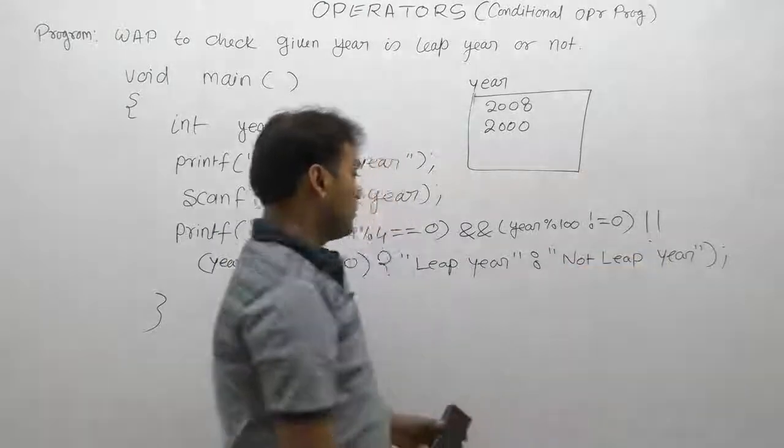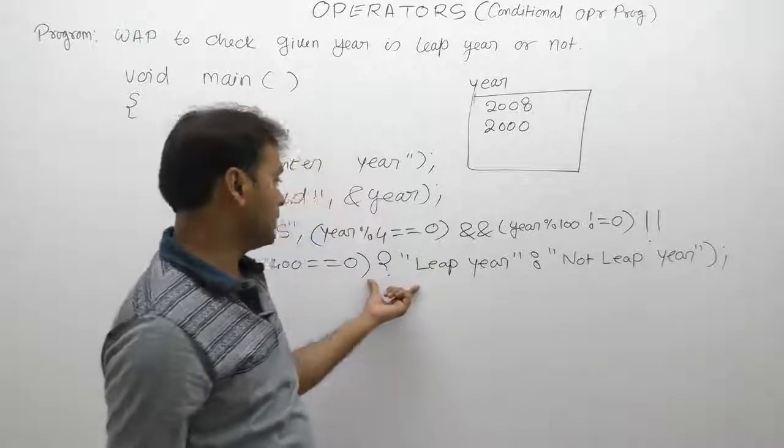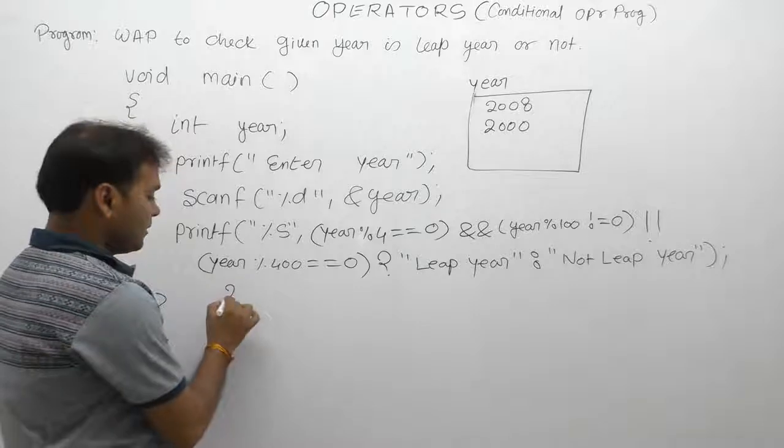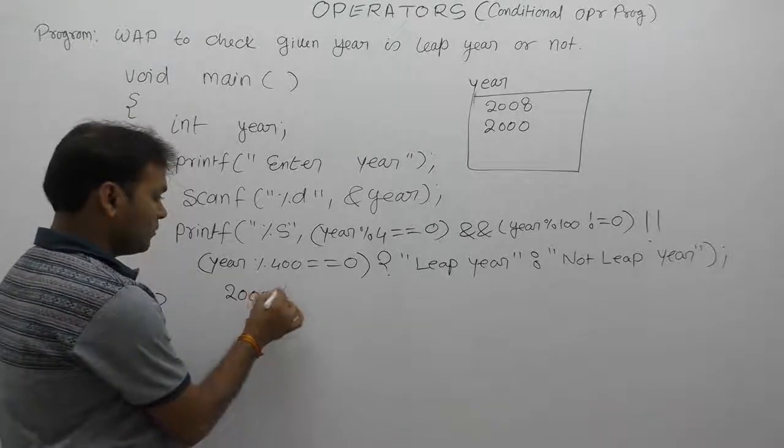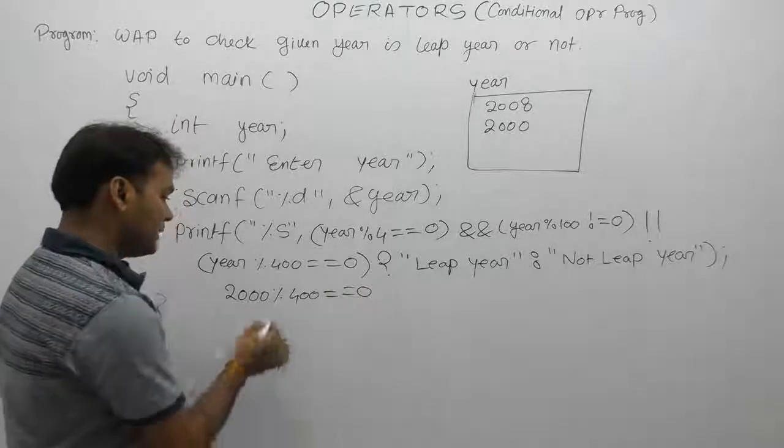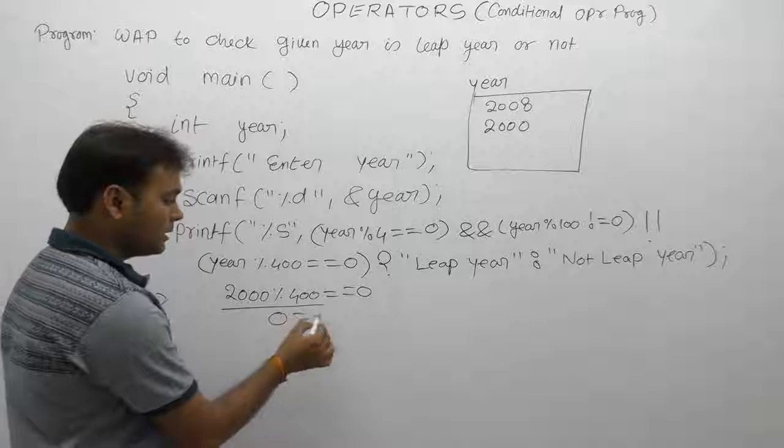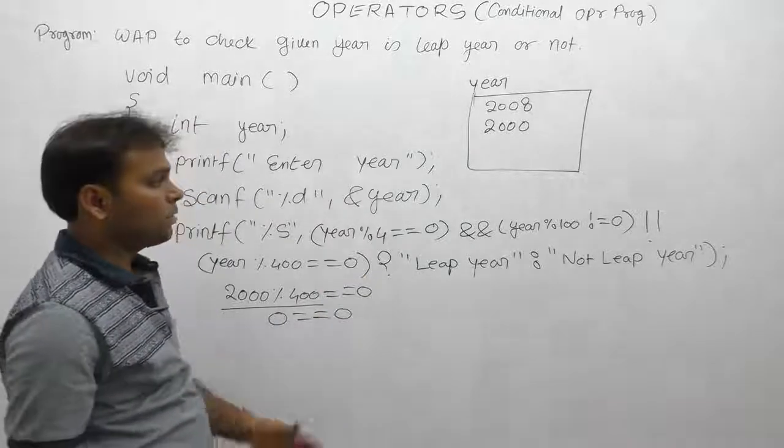Testing with OR condition. Test second condition: 2000 modulo by 400 equals equals 0. This case when 2000 divided by 400, five times, remainder 0. 0 equals equals 0, condition is true.